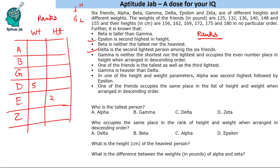Gamma is neither the shortest nor the lightest and occupies an even-numbered place in height when arranged in descending order. Even number places are 2, 4, or 6, but Gamma is not the shortest, so rank 6 is ruled out. Rank 2 in height is already taken by Epsilon, so Gamma's height rank is 4.